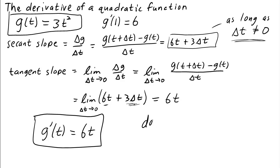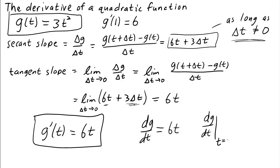So what is dg/dt? That's just another way to write the derivative — it's 6t. How about dg/dt when t is equal to 4? Plug in t equals 4: you get 6 times 4, which is 24.